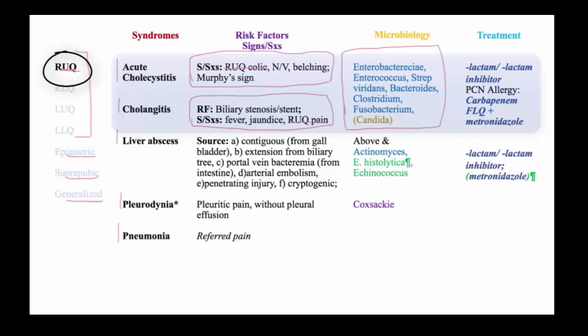The treatment for cholecystitis is usually antibiotics plus or minus surgery. We usually rely on a beta-lactam/beta-lactamase inhibitor combination with amp-sulbactam or pip-tazo. Penicillin-allergic patients may be treated with carbapenem or fluoroquinolone plus metronidazole.